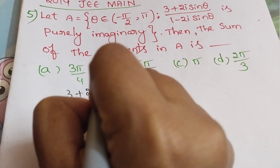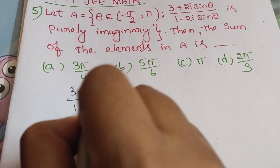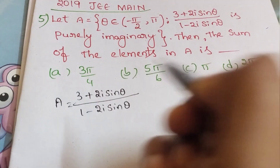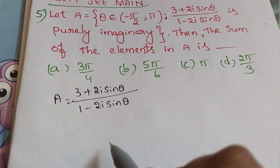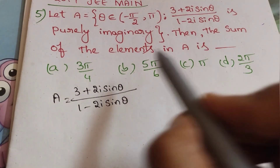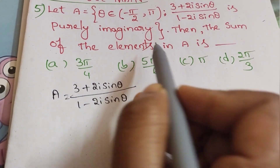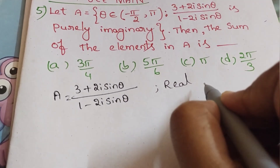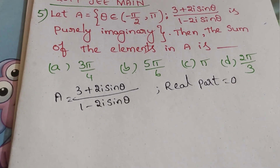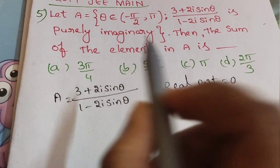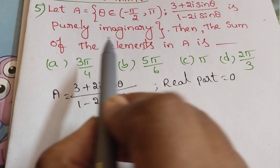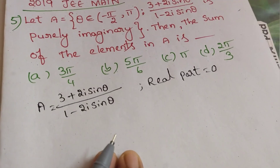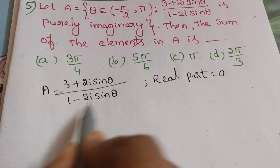First we need to write the given expression: (3 + 2i sin theta) divided by (1 minus 2i sin theta), that is A. We need to find the theta values from this. The condition given is it is purely imaginary. When it is purely imaginary, the real part is equals to zero.